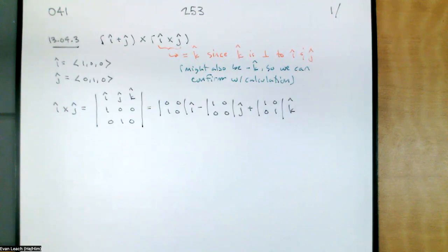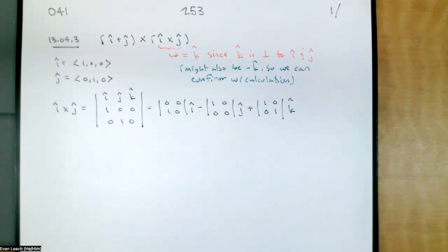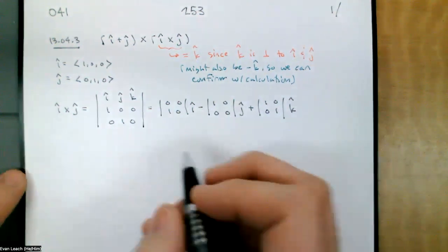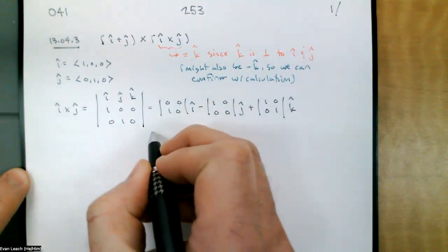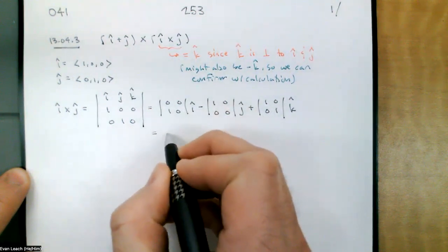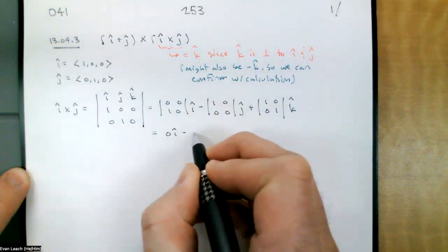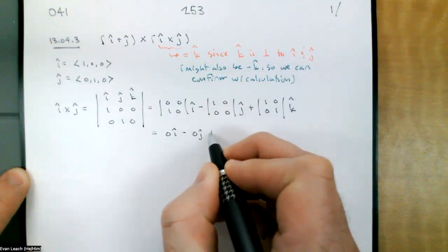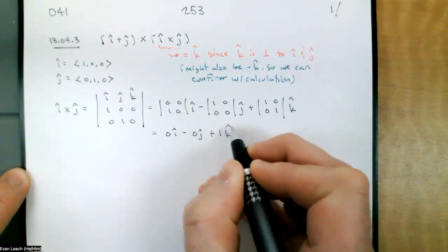Those are the standard i, j, and k — the standard basis for R3. Notice that for i and j, since we have a zero row for i and a zero column for j, those are both going to zero out. So when we multiply all these things out, we get 0i minus 0j plus 1k, just as we had suspected.